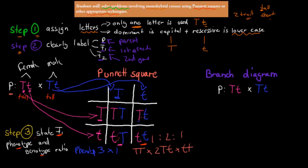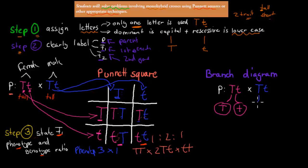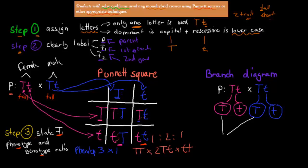The branch diagram is very similar. You separate the alleles — capital T and lowercase t for the mother, and capital T and lowercase t for the father. Then you look at all combinations. If the child gets capital T from mom and capital T from dad, it's homozygous dominant. If it gets capital T from mom and lowercase t from dad, it's heterozygous tall.